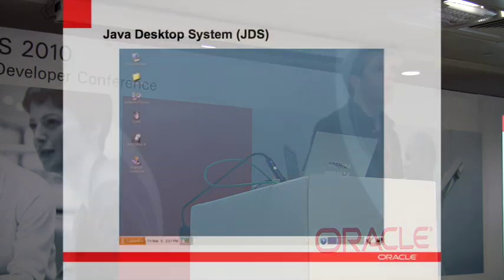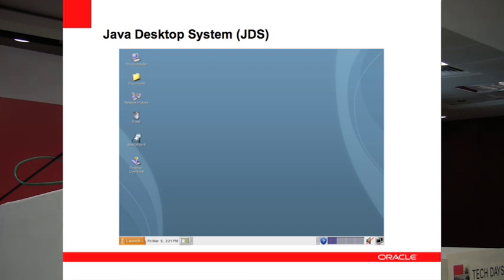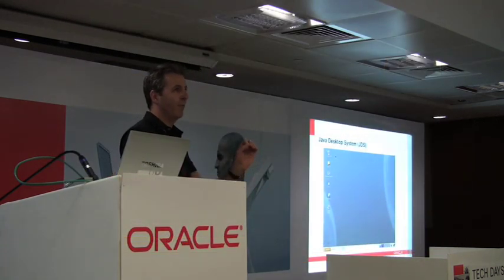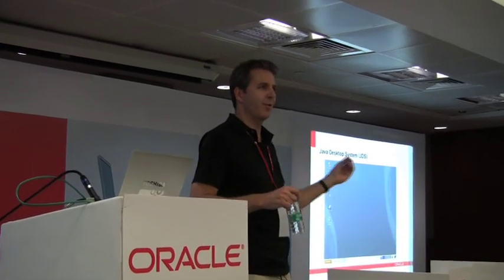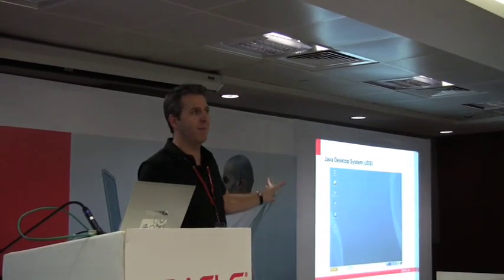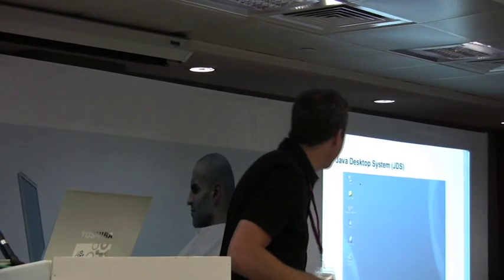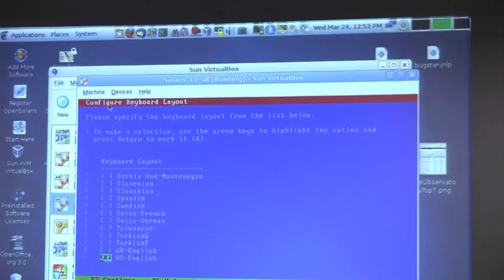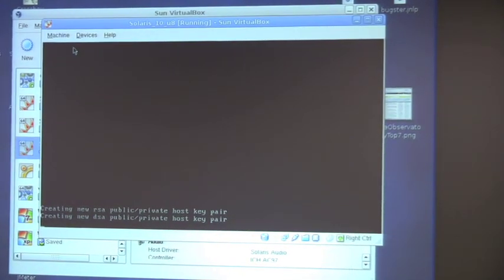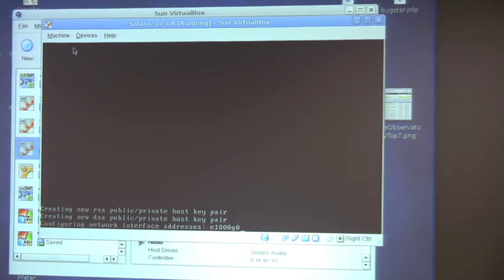Once Solaris 10 boots up, we're brought into what we call the Java Desktop System. This desktop is GNOME-based. If you're a Linux person, you know GNOME, but it's been redesigned to look more like Windows — so instead of a start menu there's a launch menu, instead of My Computer it's This Computer, instead of My Documents it's Documents. The intent is that as a new user you look at it and think, 'I kind of get this.' Now we're going to go through a one-time system configuration step — it'll ask questions like my keyboard layout, then configure my network.